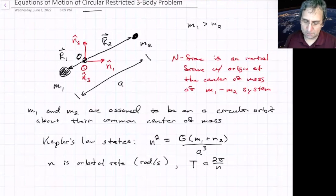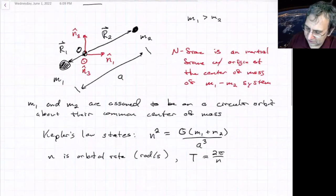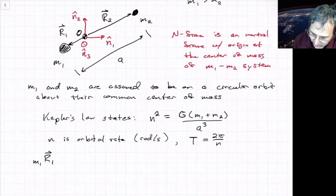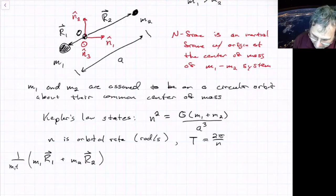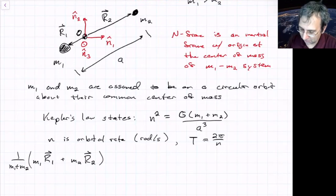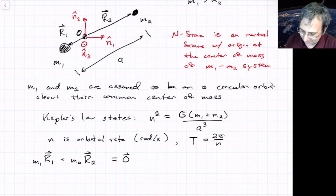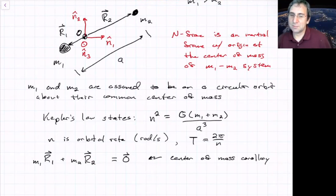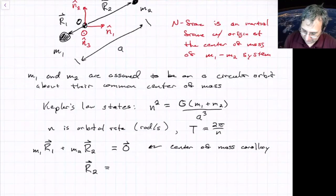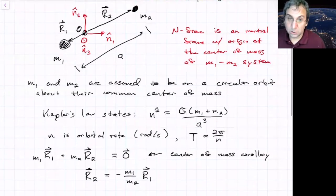We also know how M1 and M2 are related due to the center of mass corollary: M1 times R1 plus M2 times R2, divided by the total mass, gives the location of the center of mass. But the location of the center of mass in our chosen frame is the origin, so it equals the zero vector. This tells us R2 equals negative M1 over M2 times R1. So all we really need to solve for is the motion of R1 or R2, and we get the other one for free.